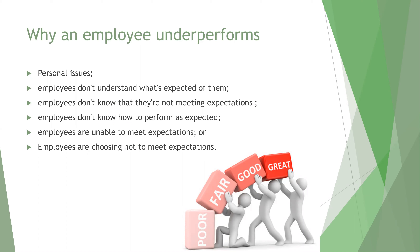Employees need very clear direction about their responsibilities along with expectations for achievement. This should involve things like job descriptions, appraisals, and regular catch-ups to help employees align their responsibilities and accountabilities. If you're worried employees don't understand the goals set for them, ask them to do a self-assessment — have them write down how they assess their performance and what they believe are the three most important goals for their role. This will help start a discussion to get into the detail.